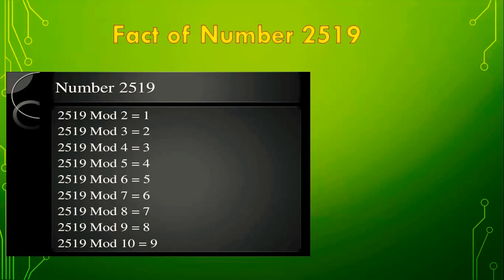That means the number 2519 is not exactly divisible by any number between 2 and 10. This is a very important fact of the number 2519.